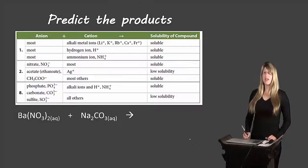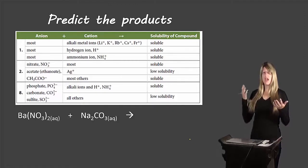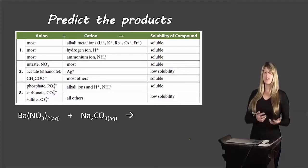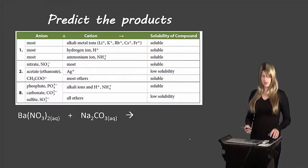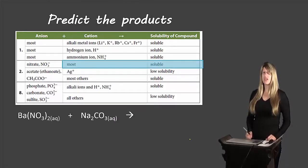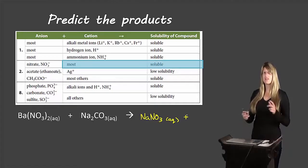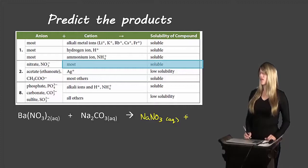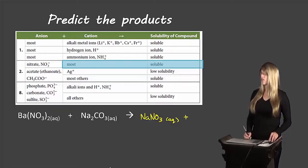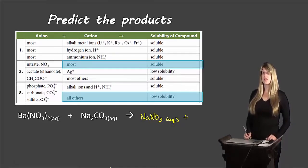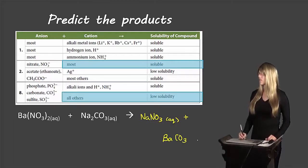Let's look at another example: barium nitrate, an aqueous compound, reacting with sodium carbonate, also aqueous. The barium and sodium are the two cations that swap places. Sodium will combine with the nitrate. Looking at the nitrate section of our chart, most cations combined with nitrate are soluble, so sodium nitrate will be aqueous — using the crossing-over rule, there's one of each ion, so no subscripts. Then barium combines with carbonate. Looking at the carbonate section, almost all cations have low solubility with carbonate, meaning they form a precipitate. So barium carbonate will be a solid.